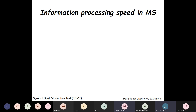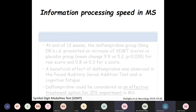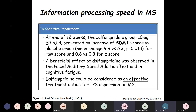They also looked at information processing speed in MS. Regarding cognitive impairment in MS: at the end of 12 weeks, the Dalfampridine group 10 mg twice daily presented an increase in symbol-digit modality test scores versus the placebo group, with significant improvement. Thus, it can be considered an effective treatment option for information processing speed in MS.